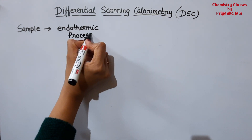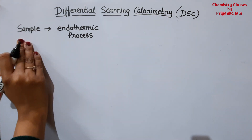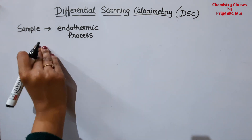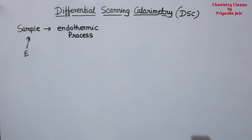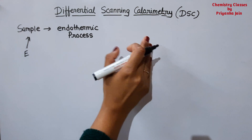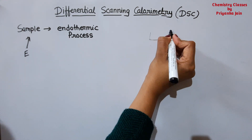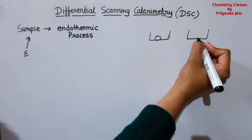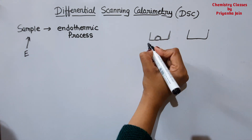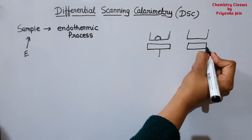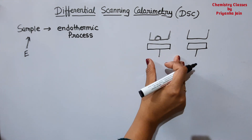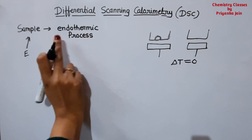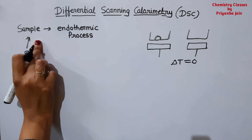Suppose the sample is undergoing an endothermic process — heat is absorbed, so its temperature will decrease. But we have to maintain zero temperature difference between the sample and the reference. So we have to supply energy to the sample from outside so that the process can happen and the temperature remains the same at both places. This is the sample holder and reference compound holder, and we have heaters at both places.